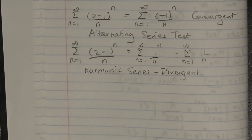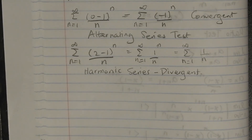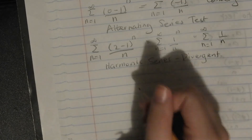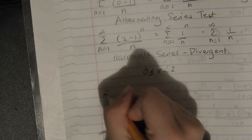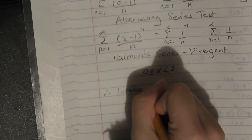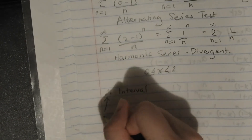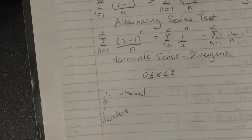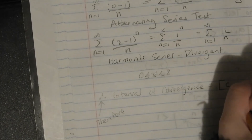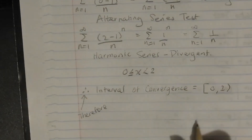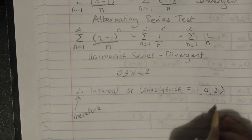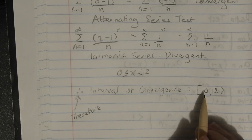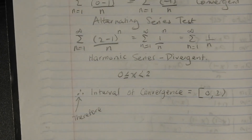So what does this tell us about the interval? The series is convergent between 0 and 2, including 0 but excluding 2. Therefore x is greater than or equal to 0 and less than 2. In interval notation, the interval of convergence equals [0, 2). The square bracket means we include that point, and the round bracket means we exclude that point. Thanks for watching.